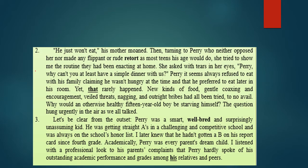Paragraph two. 'He just won't eat,' his mother said. Turning to Perry — who neither opposed her nor made any flippant or rude retort as most teens his age would do — she tried to show the routine they had been enacting at home. So Perry was a very well-mannered boy; he didn't throw an angry answer at his mother. She asked with tears in her eyes, 'Perry, why can't you at least have a simple dinner with us?' Perry always refused to eat with his family, claiming he wasn't hungry and preferred to eat later in his room, yet that rarely happened. New kinds of food, gentle coaxing, veiled threats, and outright bribes had all been tried to no avail.